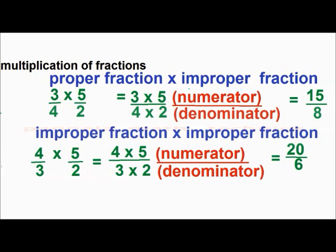And now, improper fraction into improper fraction: 4 by 3 into 5 by 2. The numerators are 4 and 5; multiply 4 into 5, that is 20. And multiply the denominators separately: 3 into 2, that is 6. So, that is equal to 20 by 6.